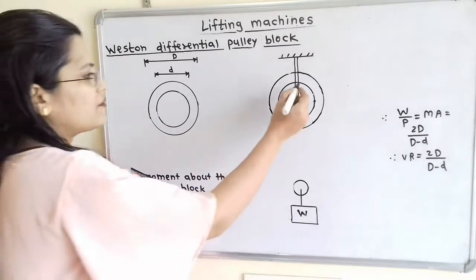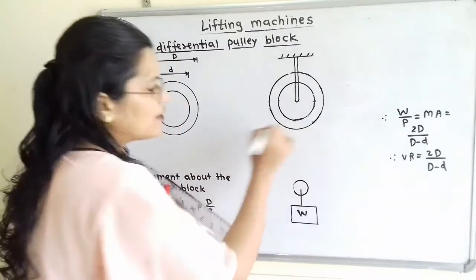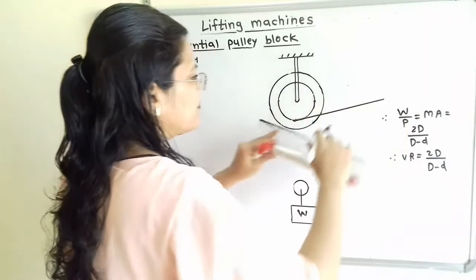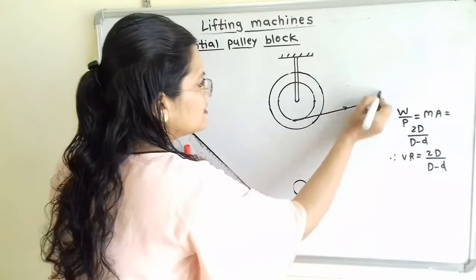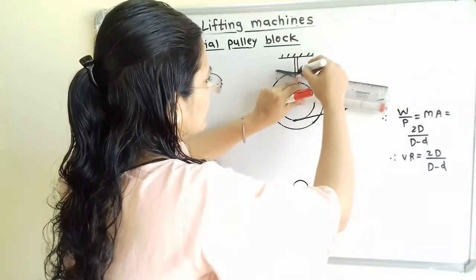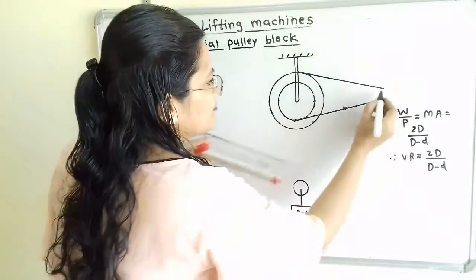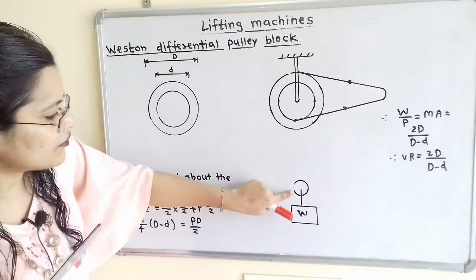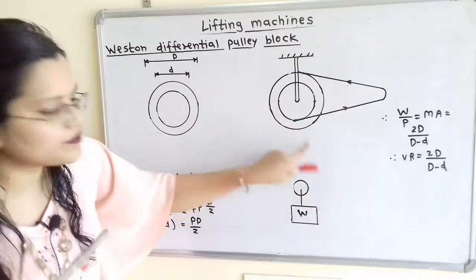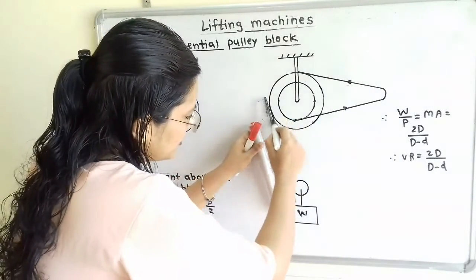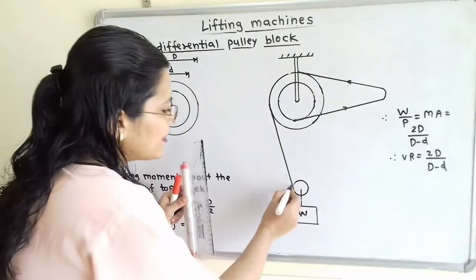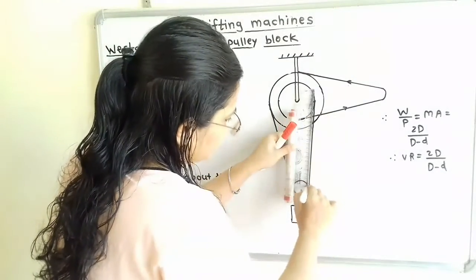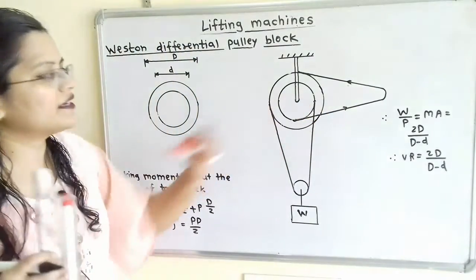We start this endless chain from the top block at the smaller wheel. Then we pass this chain over the larger wheel. Then the same chain is passed over the bottom pulley, and the other end is connected back to the smaller wheel. So here is the start point and here is the end point.